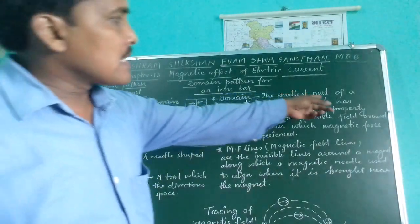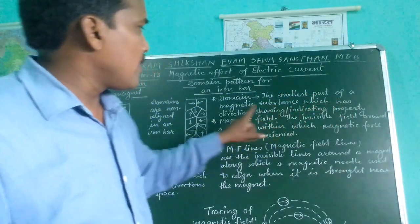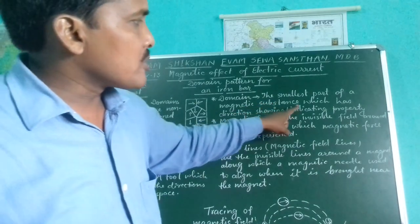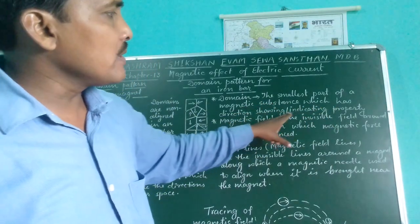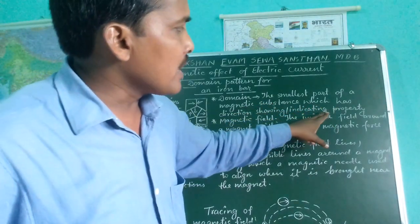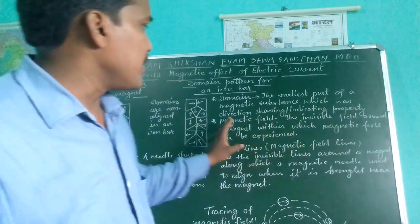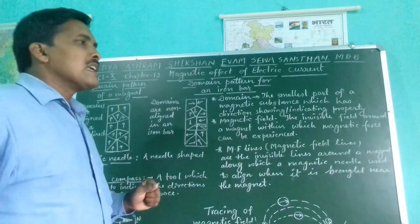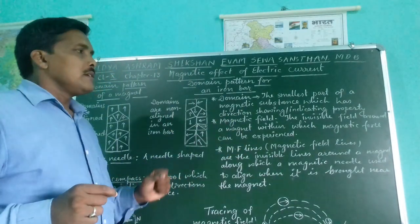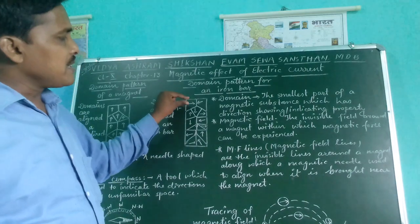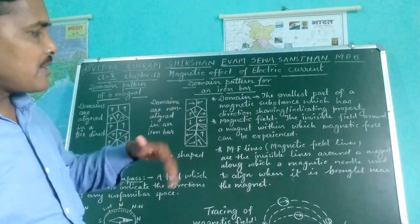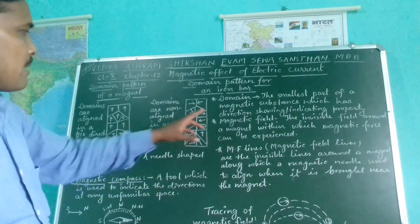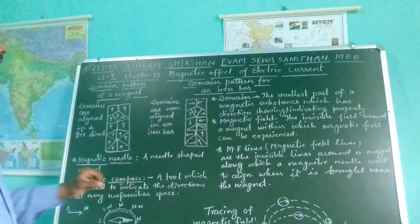Domain: the smallest section or part of a magnetic substance which has a direction-showing or indicating property. That is, the smallest part of a magnetic substance which has a direction-showing property.